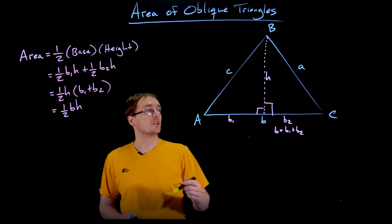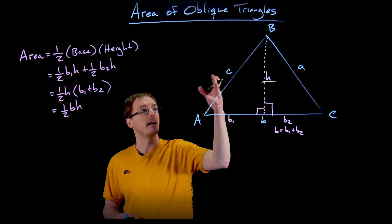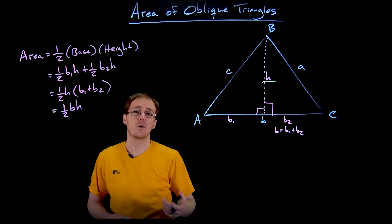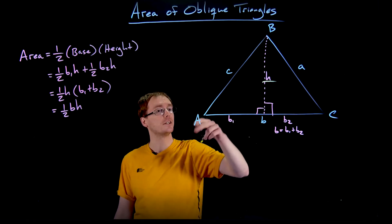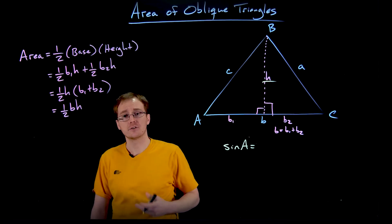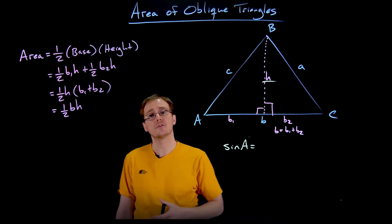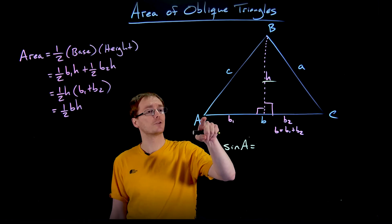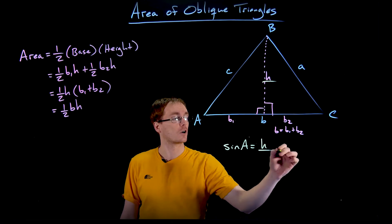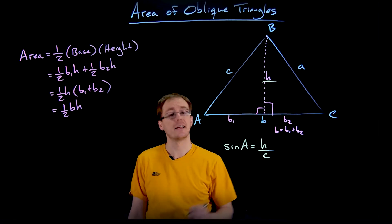So next up, we're going to express this quantity H in terms of some of these known quantities like side length C, side length B, side length A, and angles A, B, or C. In this small right triangle here, we can evaluate sine of our angle A. Remember for right triangles, our sine function can be interpreted as the ratio of the opposite side length to our angle to the hypotenuse of that right triangle. Well, for this right triangle, the side length opposite of our angle A is our quantity H, or that interior height of our triangle, and the hypotenuse is our side length of C.